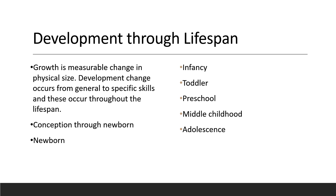Adolescence is considered ages 12 to 20. This is seen as a transition from childhood to adulthood in the United States. Puberty begins ages 11 to 13. There are various hormonal changes that are triggered by the hypothalamus. Testosterone and estrogen will both stimulate the development of primary and secondary sex characteristics, and the individual will begin to develop their sense of identity.